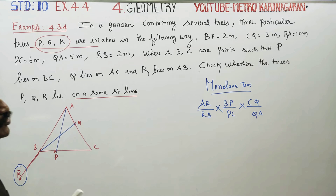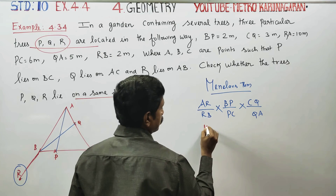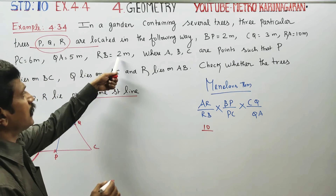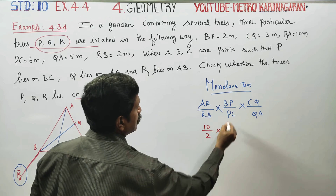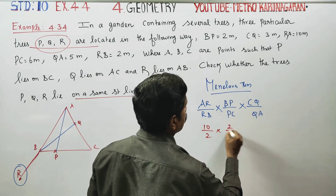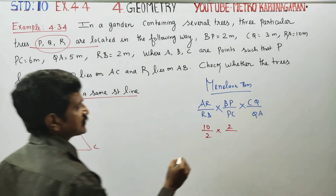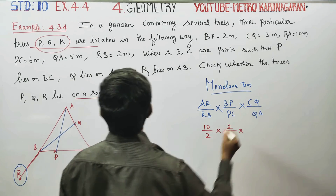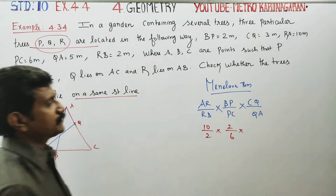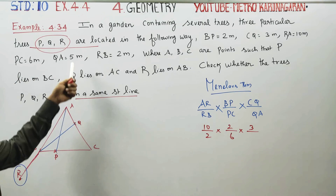You can see the measurements: AR = 10, RB = 2, BP = 2, PC = 6, CQ = 3, QA = 5.